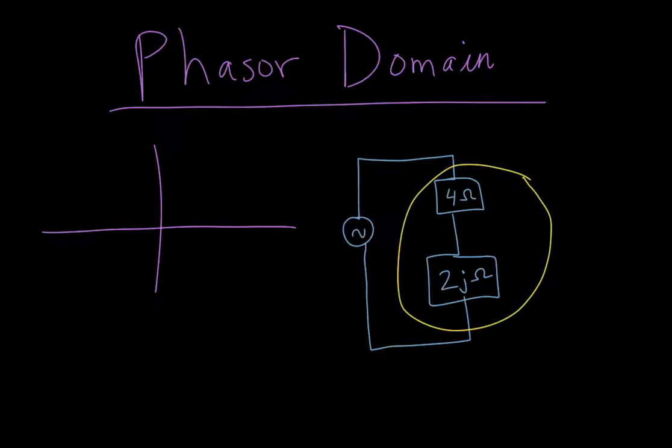So remember I said we could combine these two into one box, and then our circuit would look like one box connected to that AC voltage, and it would have a magnitude of 4 plus 2j. Even though they're not like terms, we would end up having 4 plus 2j, and the units is ohms.